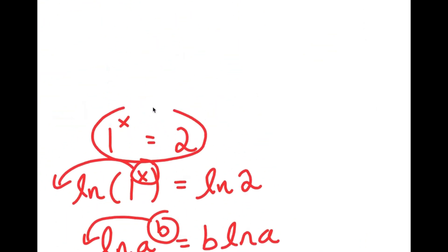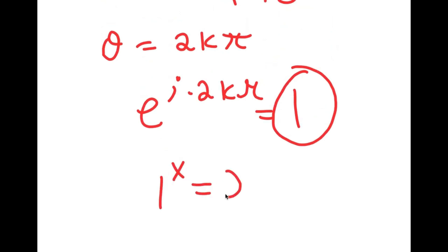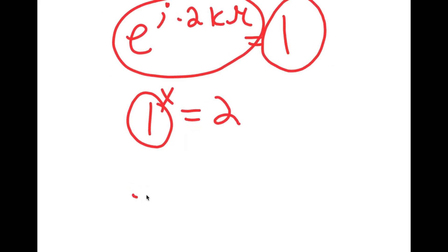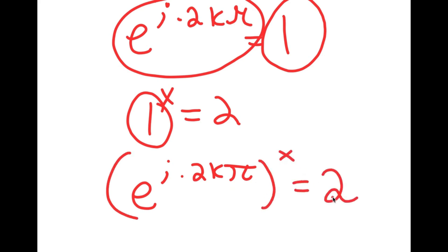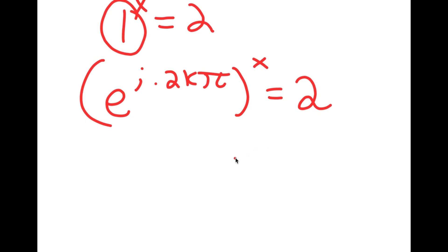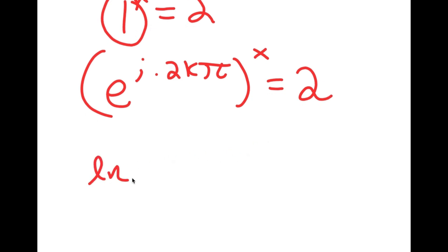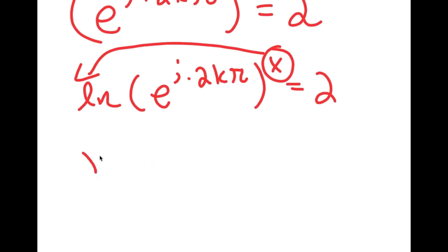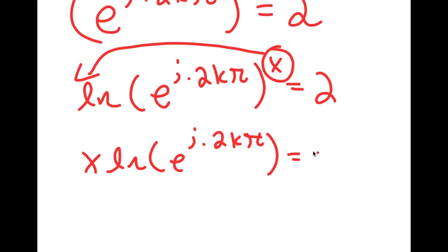Remember, our original equation was 1 to the power of x equals 2. So what I'm going to do is switch in 1 for e to the power of i times 2k pi. Now I get e to the power of i times 2k pi, all to the power of x, is equal to 2. To solve this, I'm going to take the natural log or ln on both sides, and I can move x to the front. So I get x times ln of e to the power of i times 2k pi is equal to ln 2.